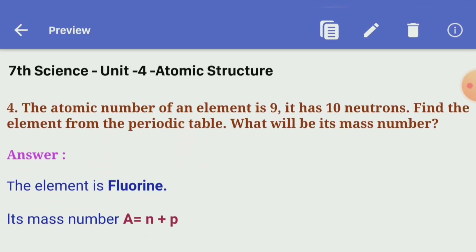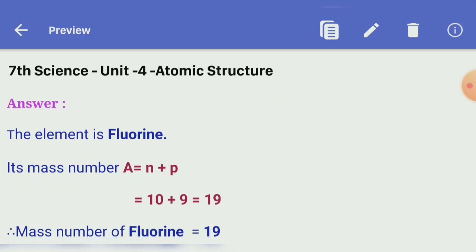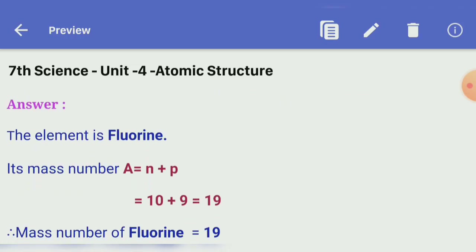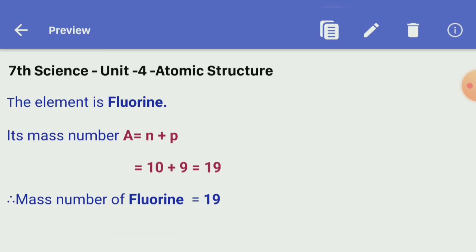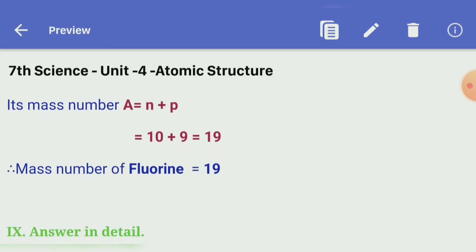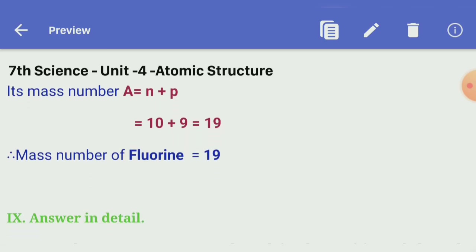Fourth question: the atomic number of an element is 9 and it has 10 neutrons. Find the element from the periodic table and calculate its mass number. Answer: the element is fluorine. Mass number A = N + P = 10 + 9 = 19. So the mass number of fluorine is 19.